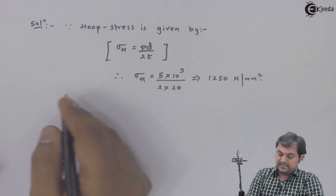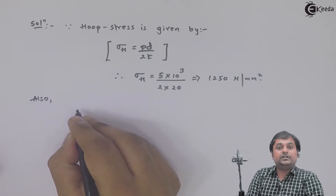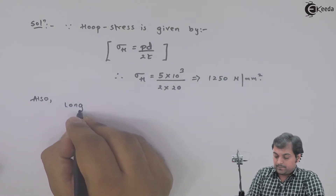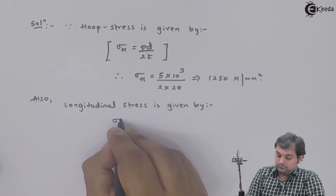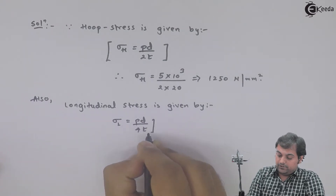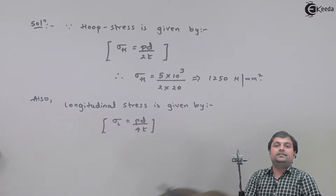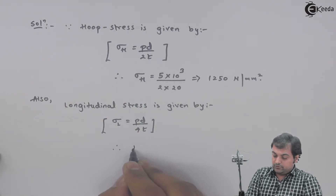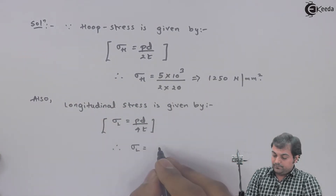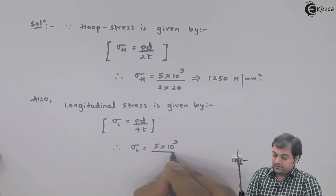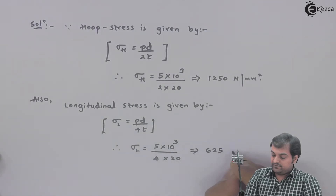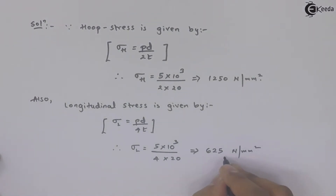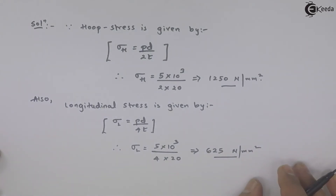Also, longitudinal stress is given by σL = PD / 4t, or longitudinal stress can directly be taken as half of hoop stress. Therefore σL = (5 × 1000) / (4 × 20), which comes out to be 625 Newton per mm square. Now I have hoop stress and longitudinal stress, so I can go for the calculation of hoop strain.